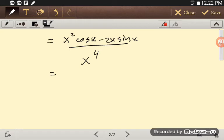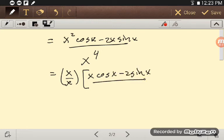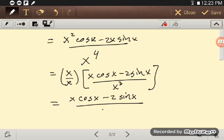And, so, then, I factored that x out of the top and one out of the bottom. So, we have x cosine x minus 2 sine x over x cubed. And, of course, x over x is 1. And, so, I can write this as x cosine x minus 2 sine x over x cubed.